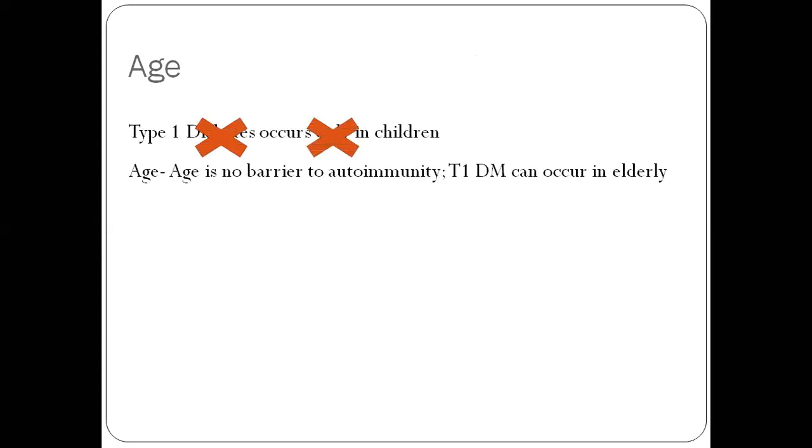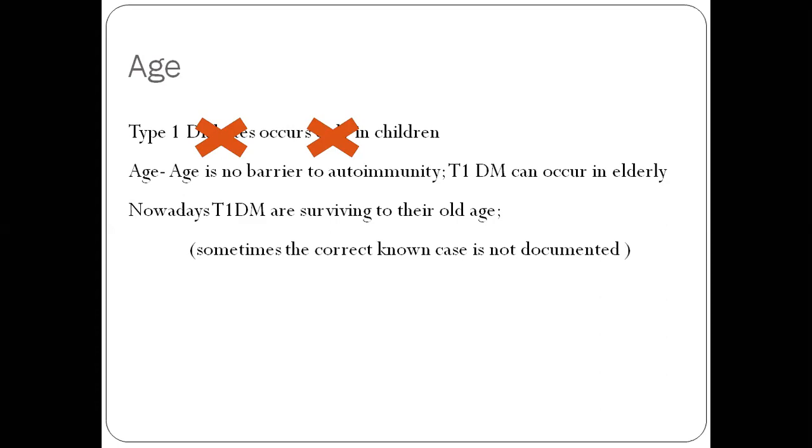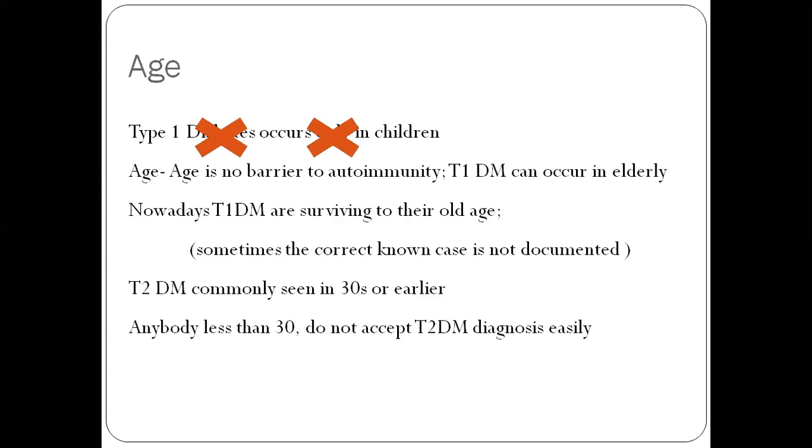Let us look at commonly used features to differentiate between the two. First one is age. Common misconception is that type 1 diabetes occurs only in children. That is not true. Age is no barrier to autoimmunity and type 1 diabetes can occur at any age. It can also occur in elderly. Because of availability of insulin, children with type 1 diabetes are surviving to old age, to their 50s and 60s. Nowadays you can see type 2 diabetes presenting in the 30s. Bottom line is that anybody who is less than 30 years of age, you should not accept a diagnosis of type 2 diabetes unless the patient is grossly obese and has features of insulin resistance.